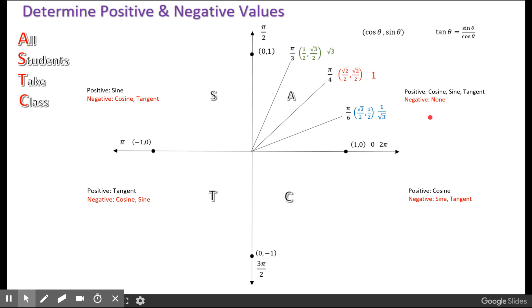In the first quadrant, everything is positive. In the second quadrant, only the sine is positive. In the third quadrant, only the tangent is positive. And in the fourth quadrant, only the cosine is positive.